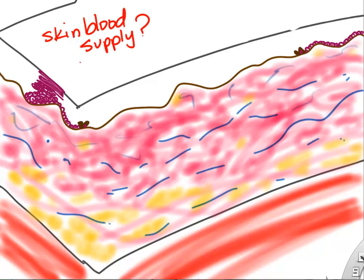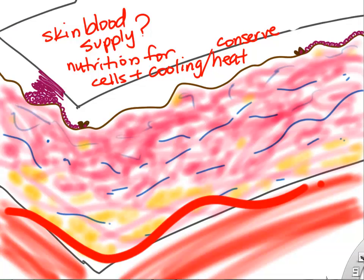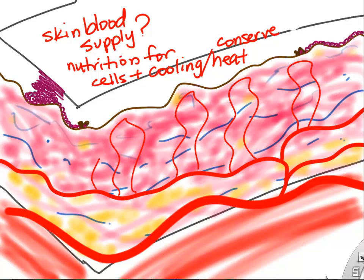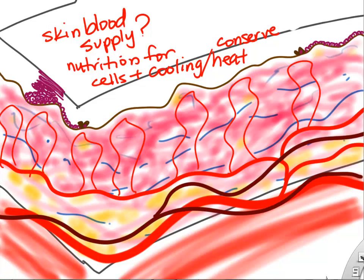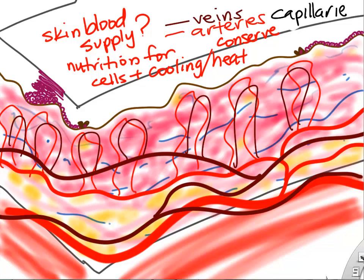Skin has a rich blood supply. Some of that is for nutrition — bringing oxygen and glucose to your cells. But a lot of skin blood flow is really just to help control your body temperature and heat regulation. We can draw some larger arteries and smaller arteries that supply the dermis with blood flow, as well as small arteries and capillaries, and veins that drain the blood flow from your skin. We have a rich blood supply going to the dermis.